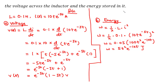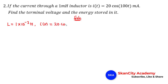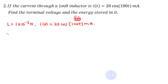Question two: the current through a 1 millihenry inductor is i(t) = 20·cos(100t) milliamperes. Find the terminal voltage and the energy stored in it. So we have the inductance L = 1 mH = 1 × 10^(−3) henries, and the current i(t) = 20·cos(100t) milliamperes.